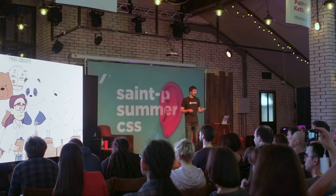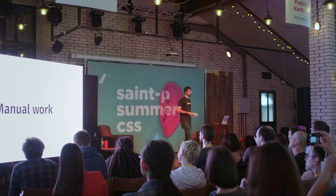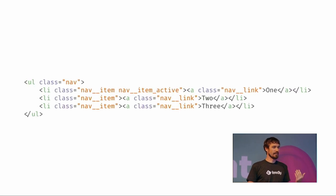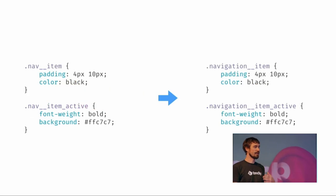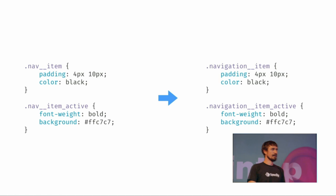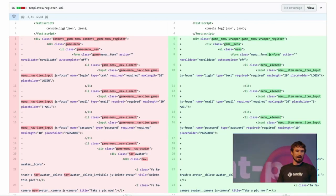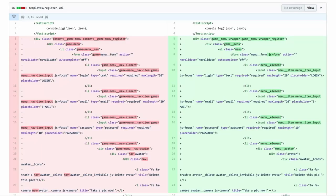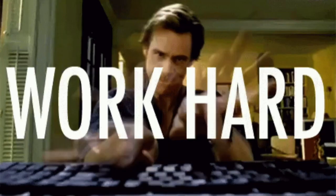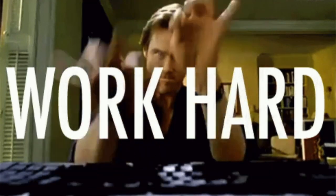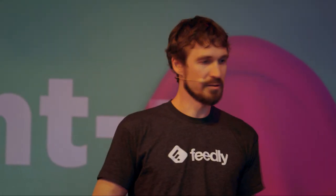The thing with BEM is it requires lots of manual work — it's kind of a mental overload. Imagine how you would refactor this. If I have a 'nav' block and want to rename it to 'navigation,' I have to update all instances and it's just a string. Find and replace — don't do this, it's bad. It requires lots of work and lots of mistakes can slip in, because you have no safety when replacing strings. You might replace something different.